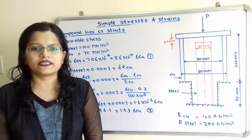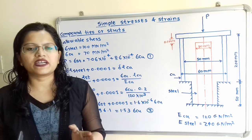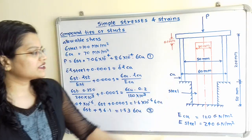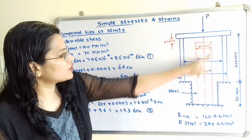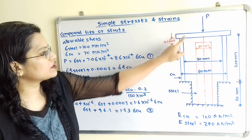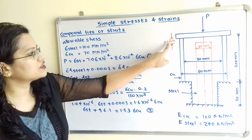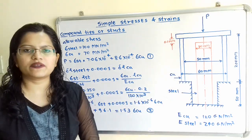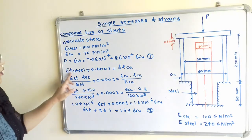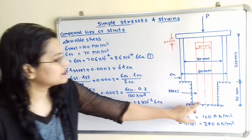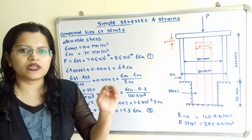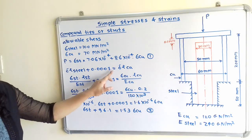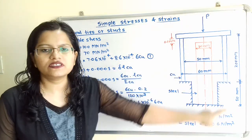Now we will apply condition 2: strain in material A equals strain in material B. Observing the diagram, the steel rod has an extra extension of 0.1 mm relative to the copper tube. So the relation is: delta_L_steel + 0.0001 m = delta_L_copper.